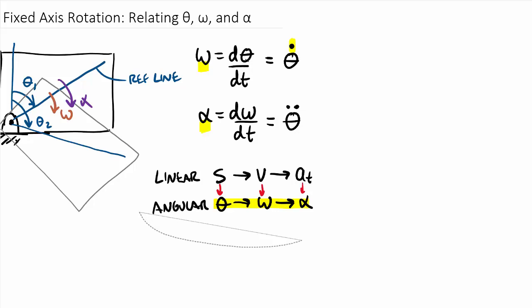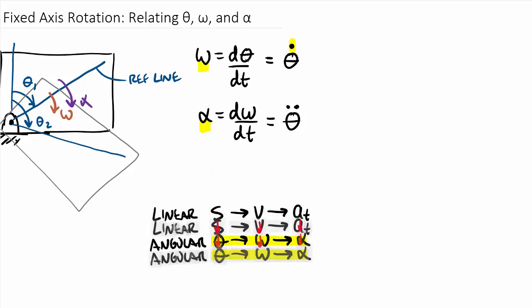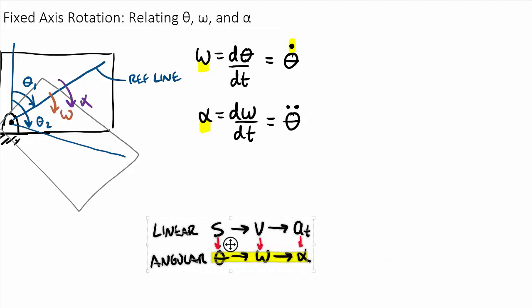Now, there is additionally another equation which we also used in a linear sense, and that is relating the position, velocity, and acceleration without respect to time. So if we do this without respect to time, then we end up with an equation that says alpha d theta is equal to omega d omega. Now, if you're wondering where this came from, let me just go ahead and derive this here quickly.